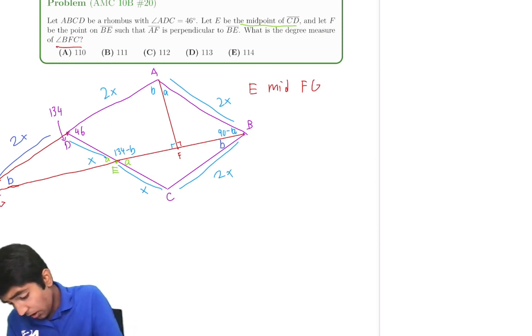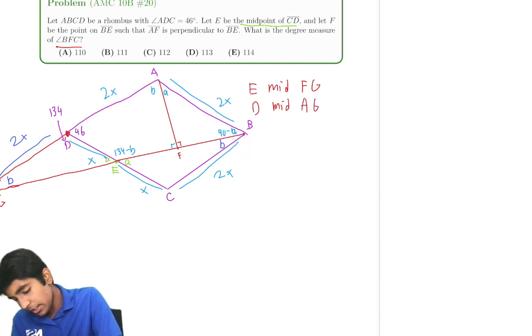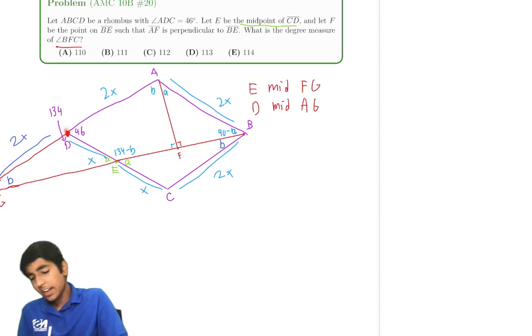Okay, but we also know that D is the midpoint of AG, right? Because they're both 2X over here. Interesting. Midpoint? Okay, the next thing.